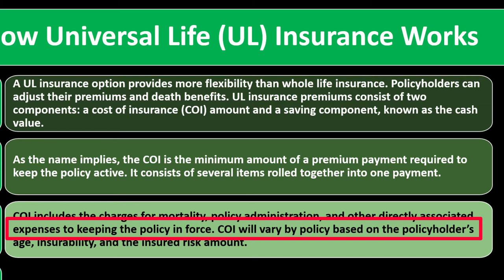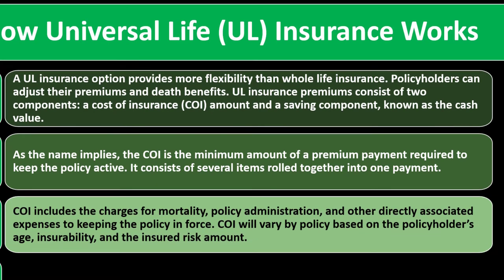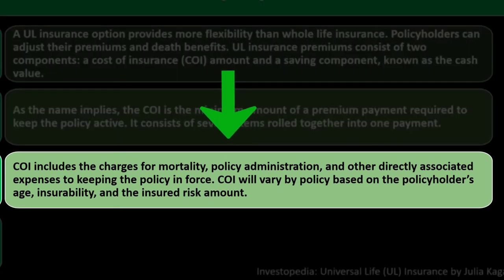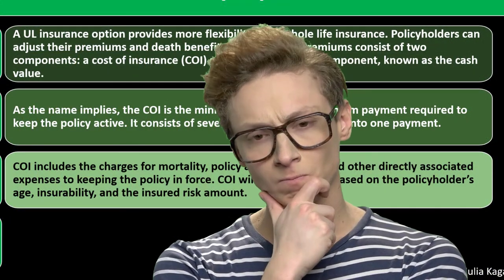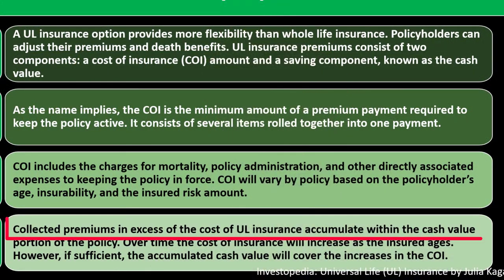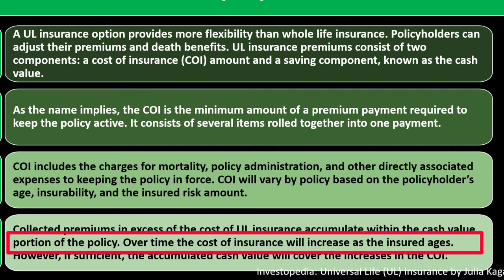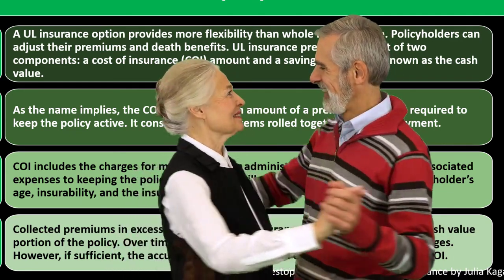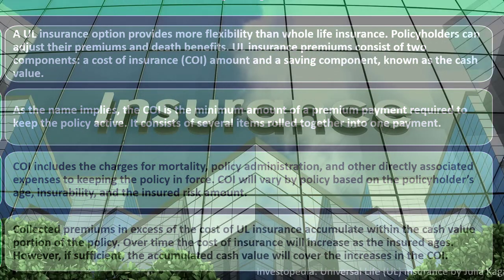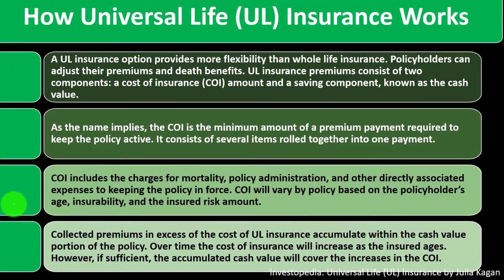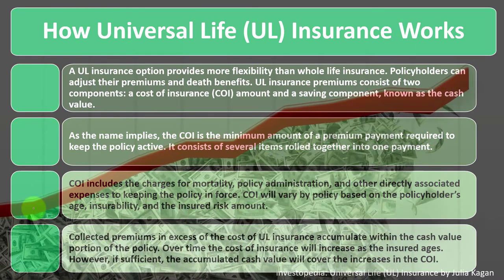COI will vary by policy based on the policyholder's age, insurability, and insured risk amount. The differences in risk factors to the insurance company will increase or decrease their level of overall risk, which would be reflected in the premium amounts. Collected premiums in excess of the cost of UL insurance accumulate within the cash value portion of the policy. Over time, the cost of insurance will increase as the insured ages — as you get older, you're more of a risk to the insurance company. If there's flexibility in the premiums, you would think that from the insurer's perspective there would possibly be increases in the premiums.